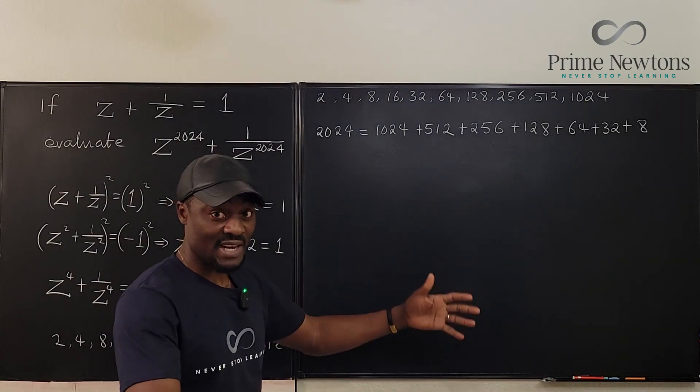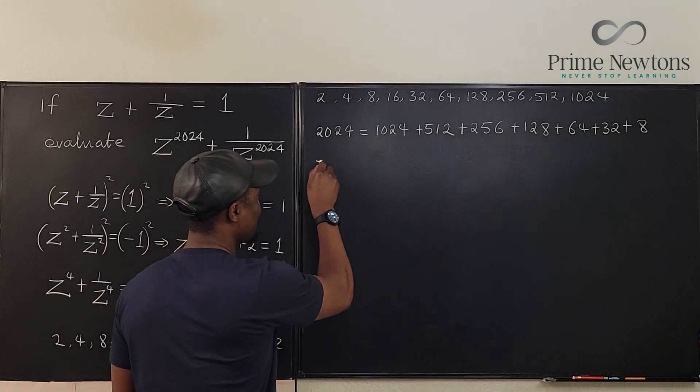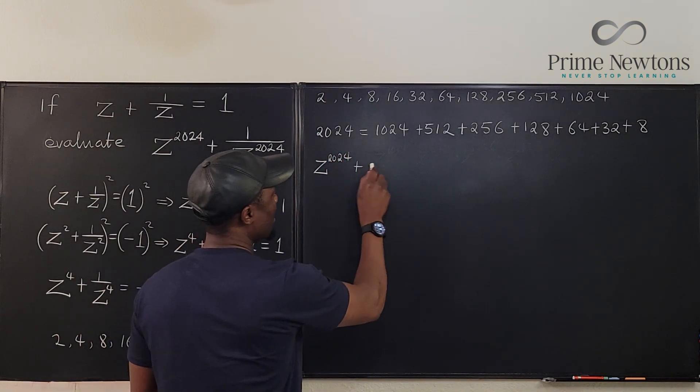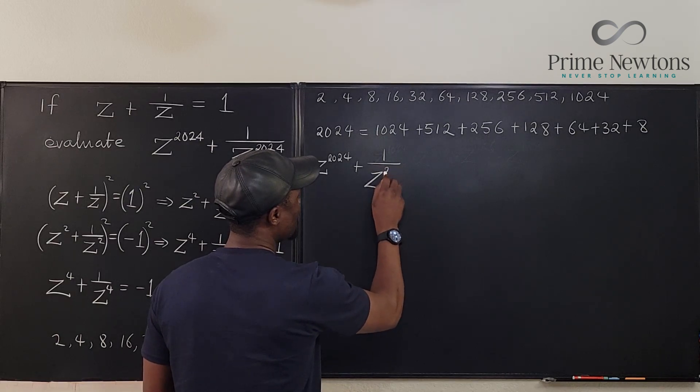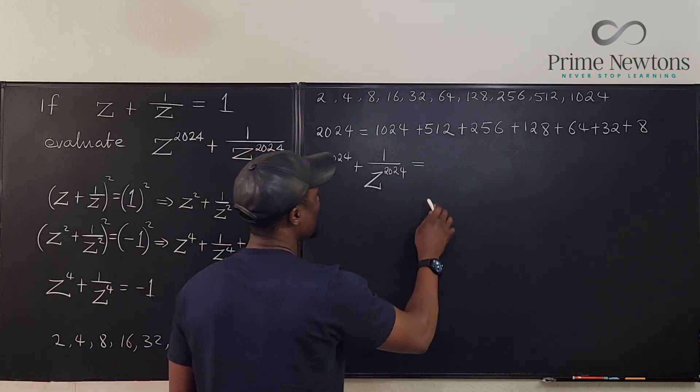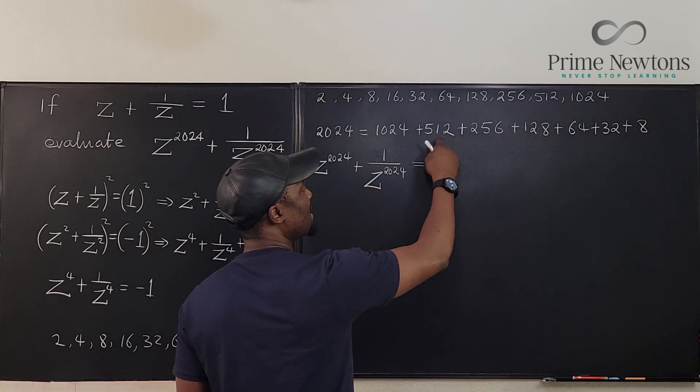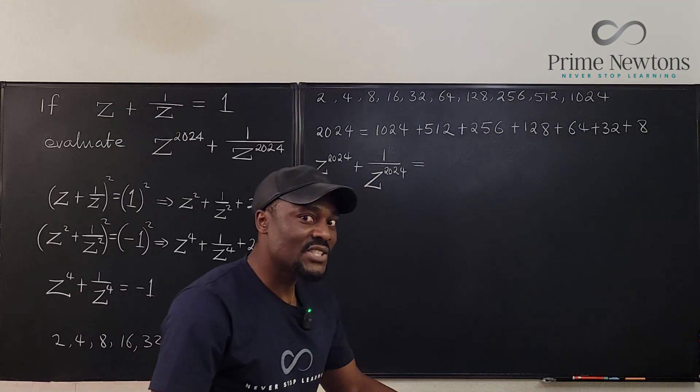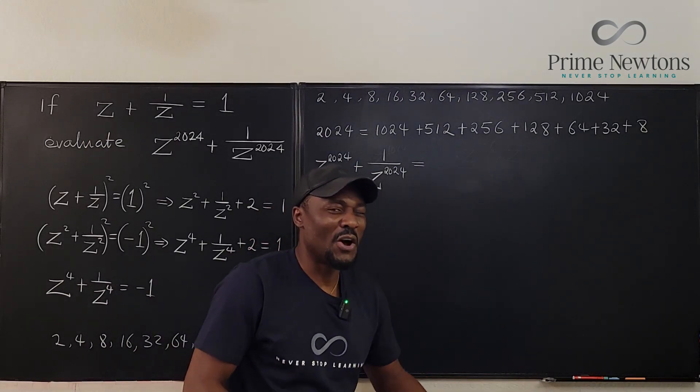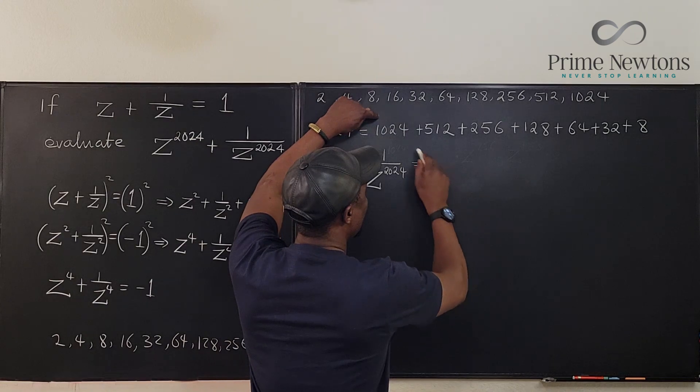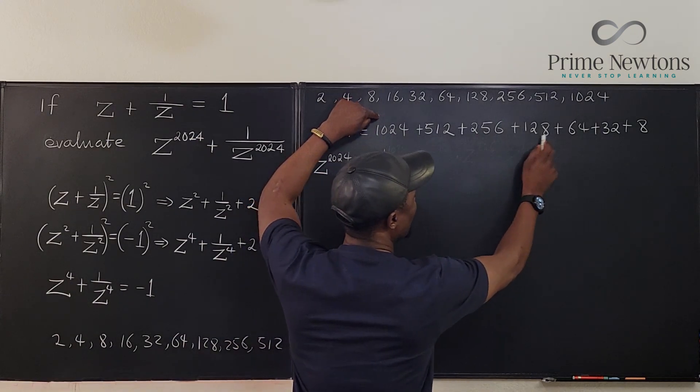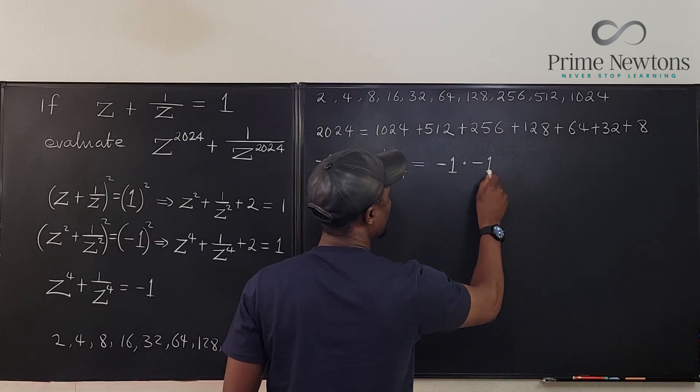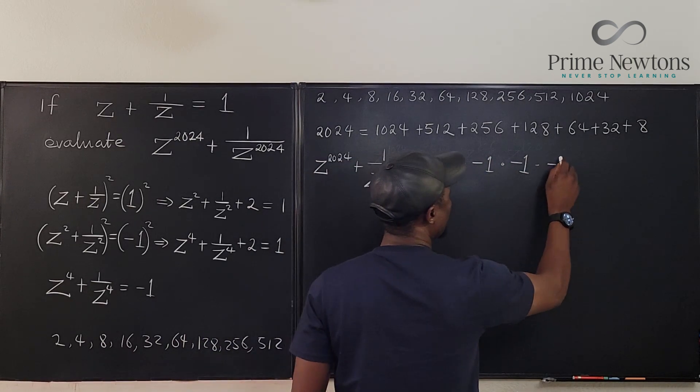So this is the key to the final answer because what we have now is we can say that z to the 2024 plus 1 over z to the 2024 will be equal to z to this times z to this times z to this times z to this because in each case you'll be getting minus 1, minus 1. So how many minus 1's do we need? It's just 1, 2, 3, 4, 5, 6, 7. It's going to be minus 1 times minus 1 times minus 1 times minus 1.